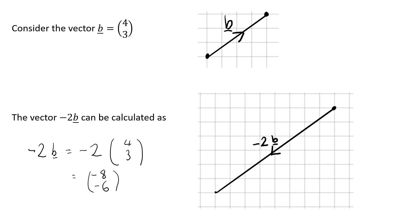Let's have a look at our vector b here — it's twice as long: 8 to the left and 6 down. So it's twice as long, but the most important thing here to note is that the arrow has changed direction. When we've got a negative scalar, that means the journey goes in the opposite direction. You need to be really careful about that. It's been scaled up by a factor of 2, but that negative tells us we're travelling in the other direction this time.